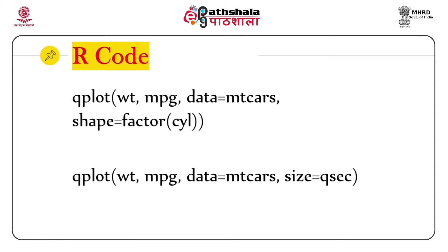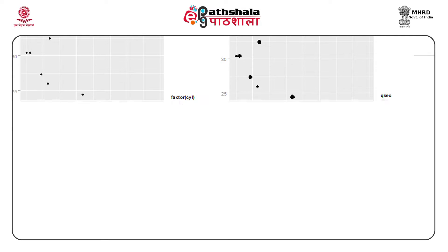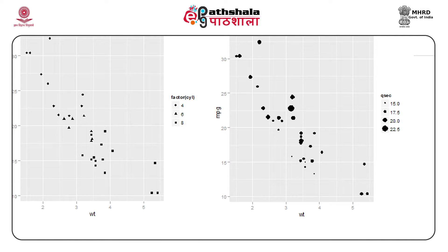You can use different aesthetic mappings as well. Have a look at the two R codes. For the first one, shape = factor(cyl) is used as an argument, whereas for the second one, size = qsec is used. For the first one, the shapes change and different shapes represent different values. But for the second one, the sizes change in an increasing order.